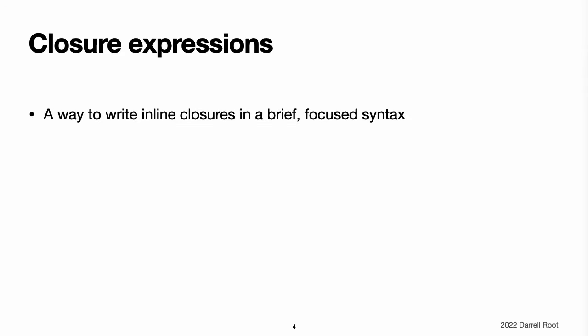Closure expressions. Nested functions, as introduced in nested functions, are a convenient means of naming and defining self-contained blocks of code as part of a larger function. However, it is sometimes useful to write shorter versions of function-like constructs without a full declaration and name. This is particularly true when you work with functions or methods that take functions as one or more of their arguments. Closure expressions are a way to write in-line closures in a brief, focused syntax that provide several syntax optimizations for writing closures in a shortened form without loss of clarity or intent. The closure expression examples below illustrate these optimizations by refining a single example of the sorted-by method over several iterations, each of which expresses the same functionality in a more succinct way.